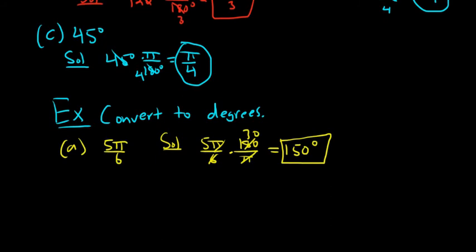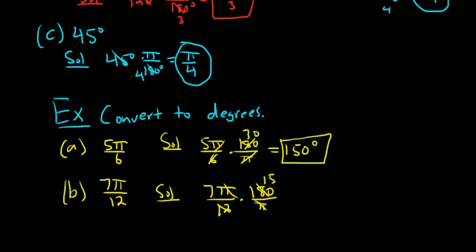And let's just maybe do one more. How about (b), how about 7π over 12? Solution. So again, we write down 7π over 12 again. And then we just multiply it by 180 over π. In this case, the π's cancel. A little bit harder here. I think 12 goes into 180, I believe, 15 times. And then 7 times 15, that's going to be 105 degrees.